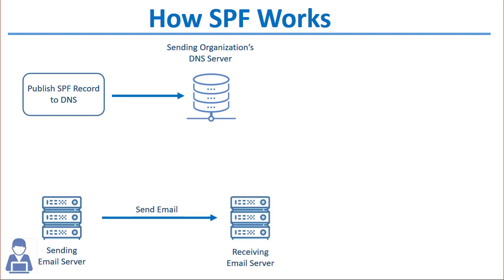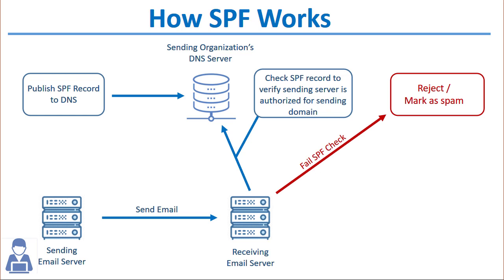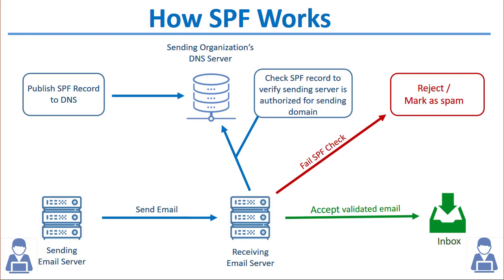When an email is sent from your domain, the receiving server checks for an SPF record to verify that the server detected in the inbound connection is authorized to send email on behalf of the sending domain. If the SPF record indicates the server was not authorized, Security Gateway can be configured to reject the message, mark it as spam, or quarantine it. If the lookup passes, the message is accepted and delivered.